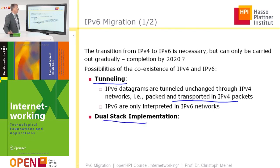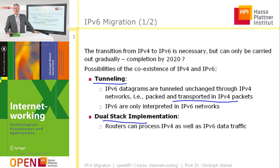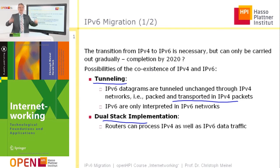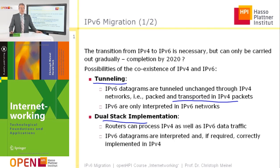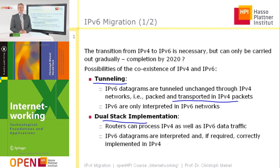Beside tunneling, another concept which allows the coexistence of IPv4 and IPv6 is so-called dual-stack implementation. Dual-stack implementation means that routers can process both IPv4 and IPv6 protocols. Routers are able to recognize whether a datagram is IPv6 or IPv4 and handle it accordingly. In this way, IPv6 datagrams are correctly processed when required.